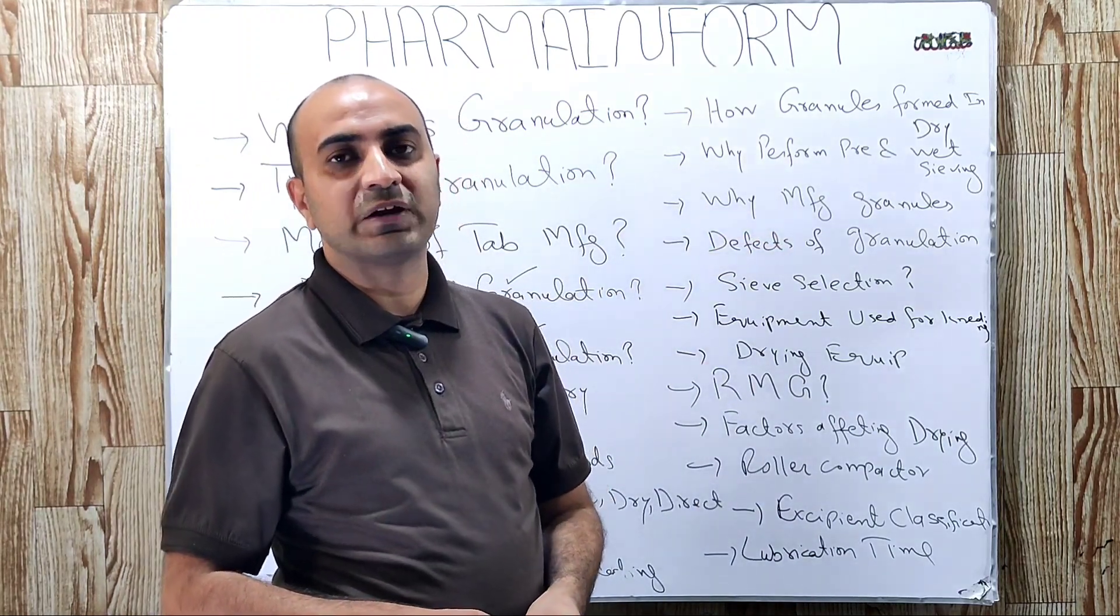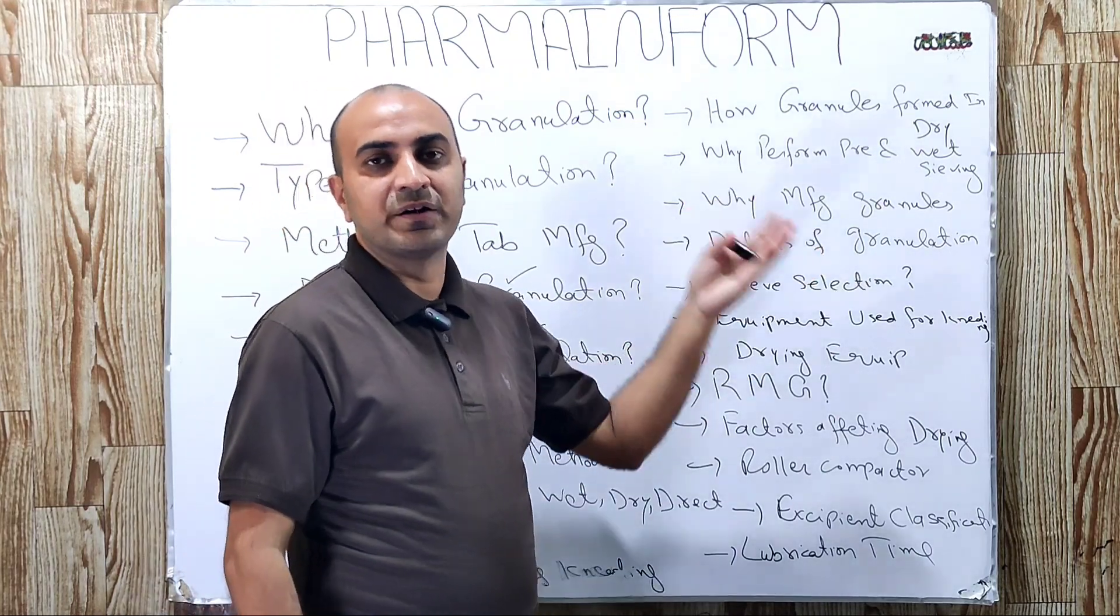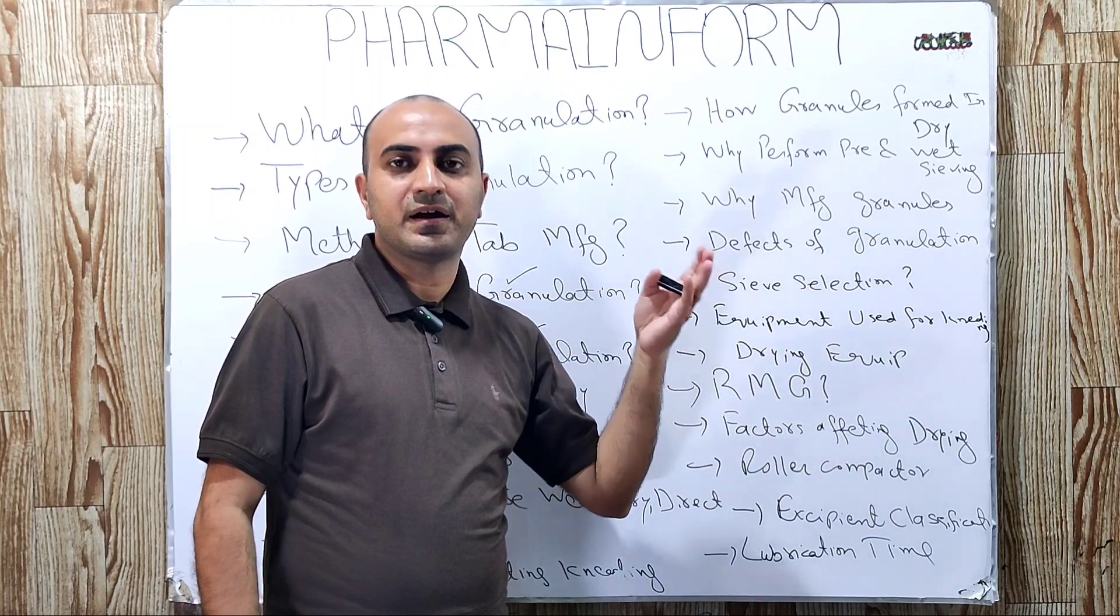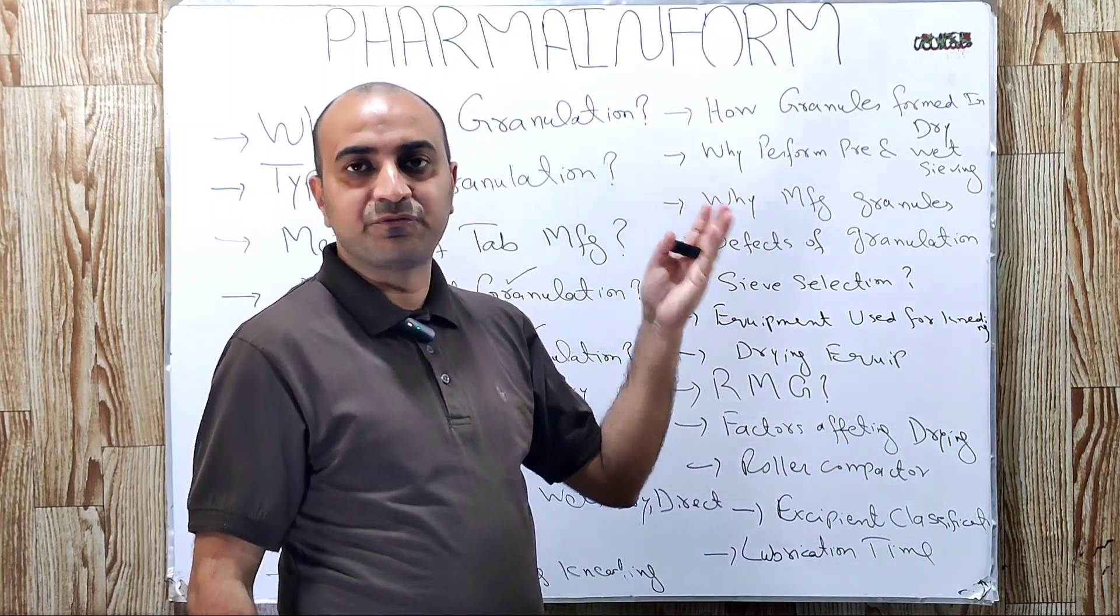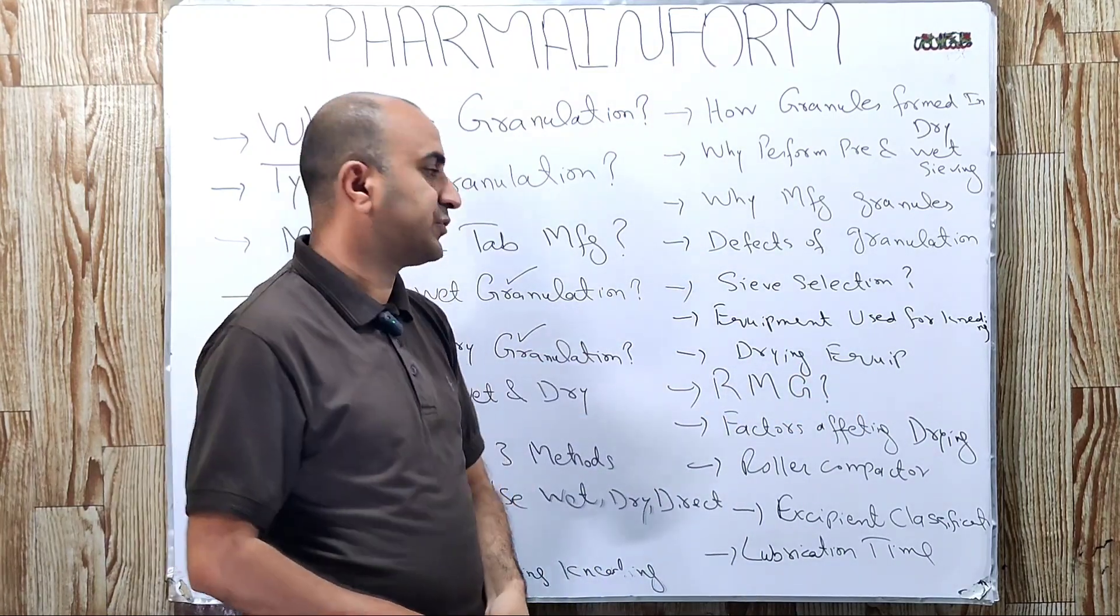What are the defects of granulation? Granulation defects are over-wetting, under-wetting, over-drying, under-drying, excessive fine production, segregation, and assay problem or mixing issue.